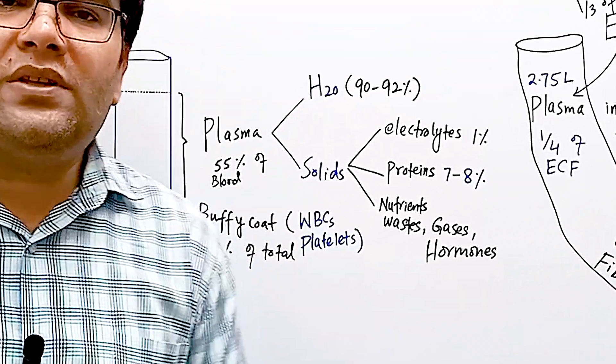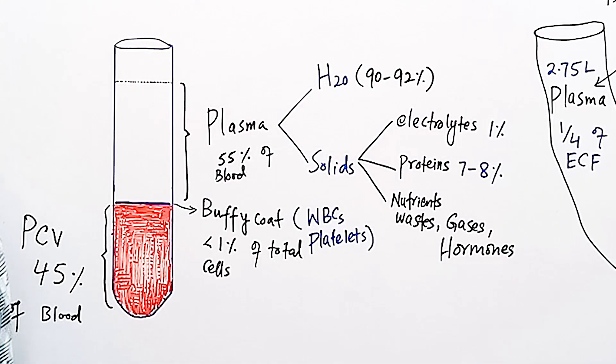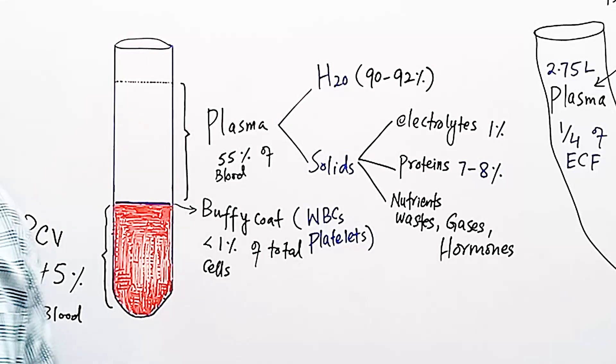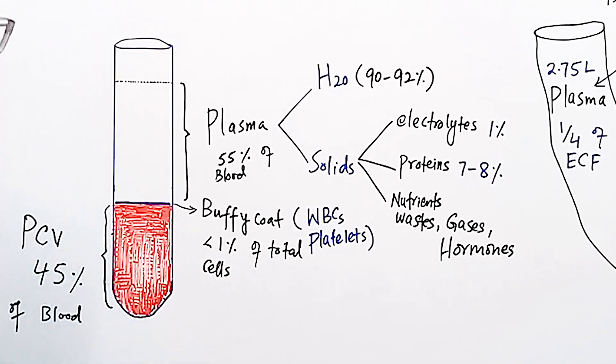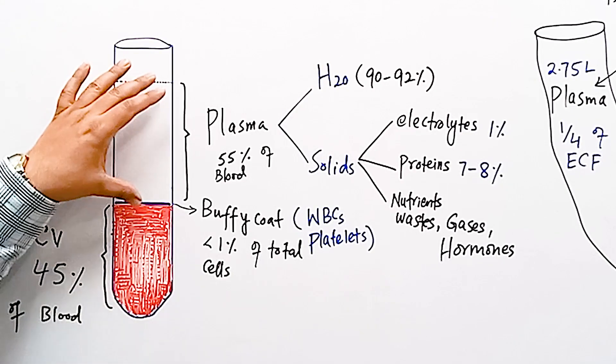Cellular elements which settle at the bottom are 45 percent in males and plasma is 55 percent. In females the cellular elements are 42 percent and plasma is 58 percent.